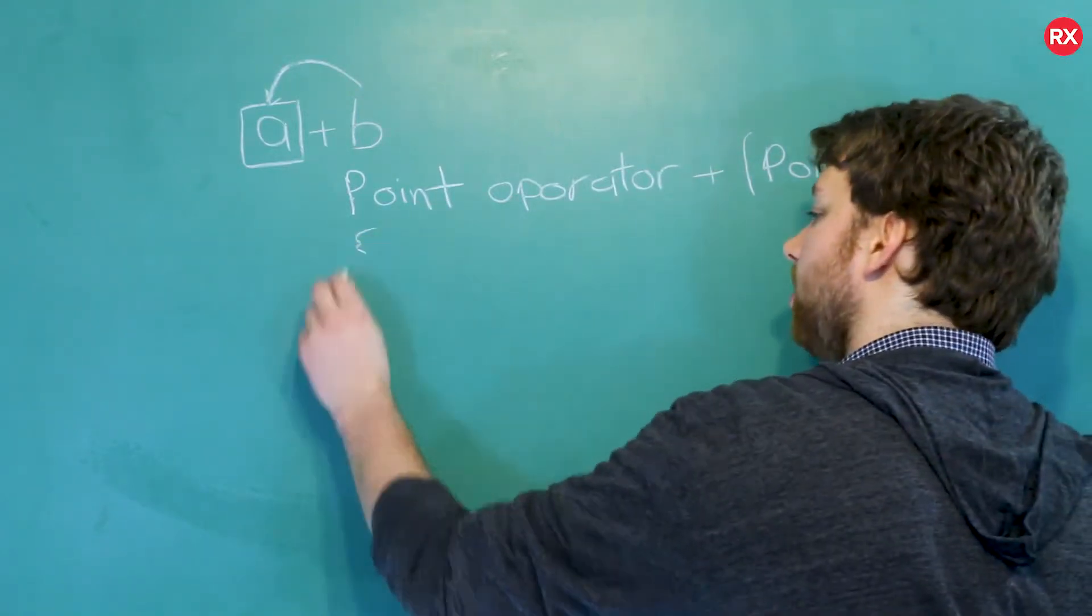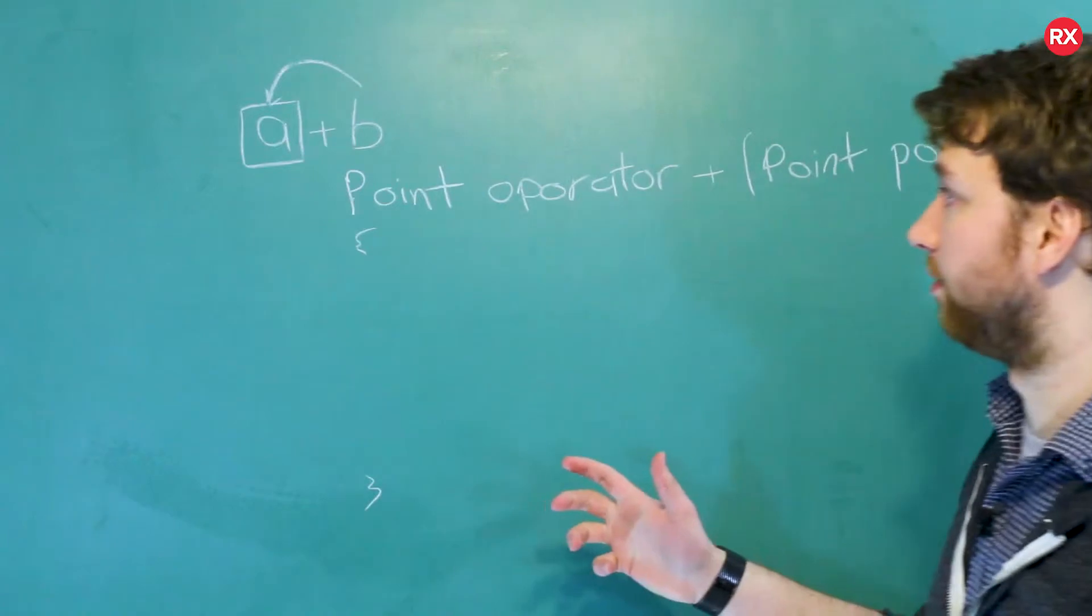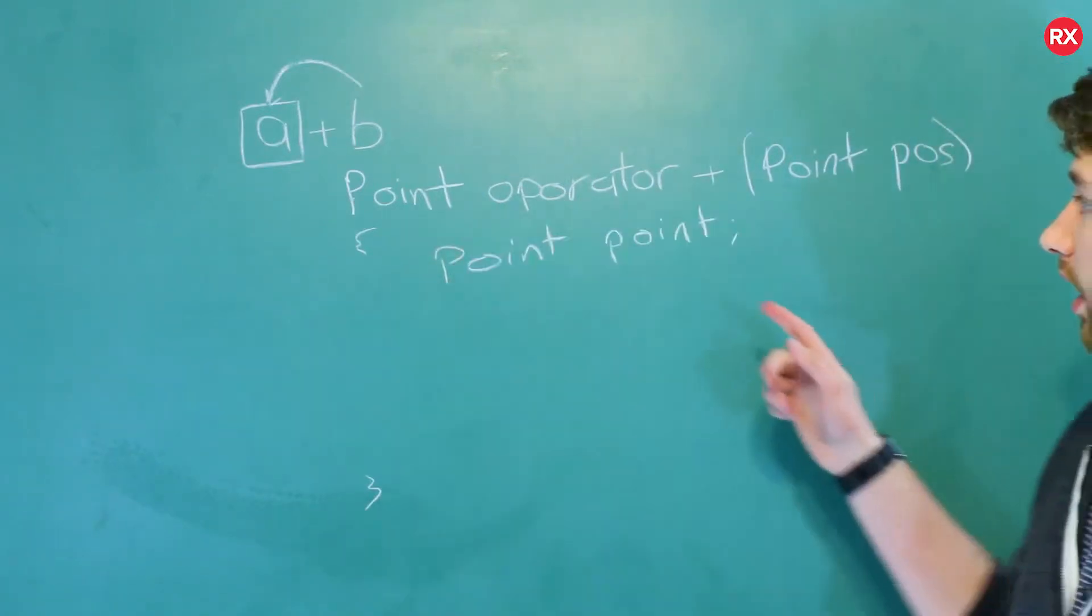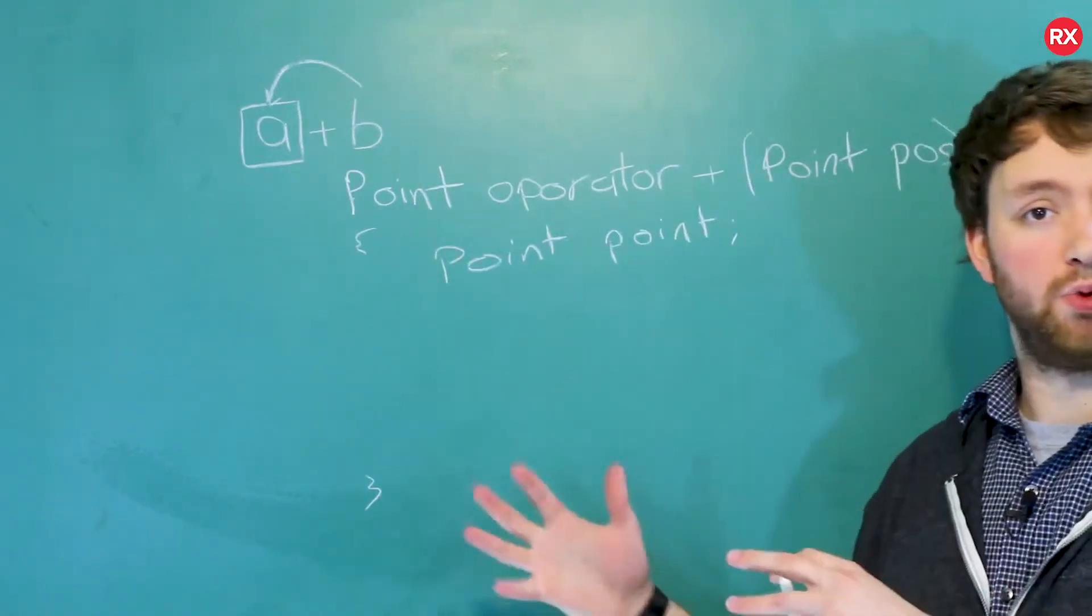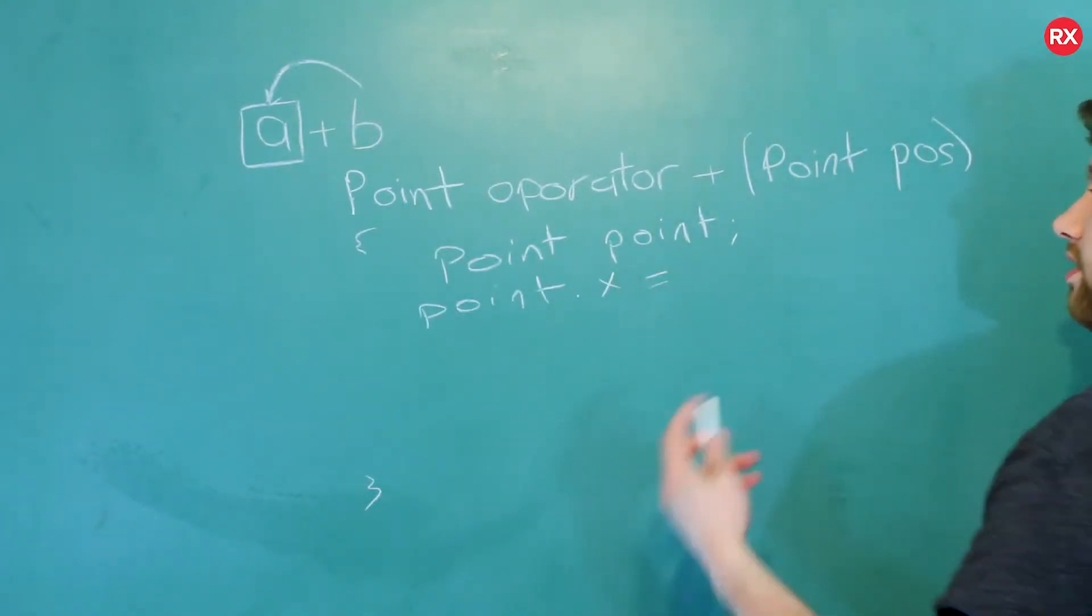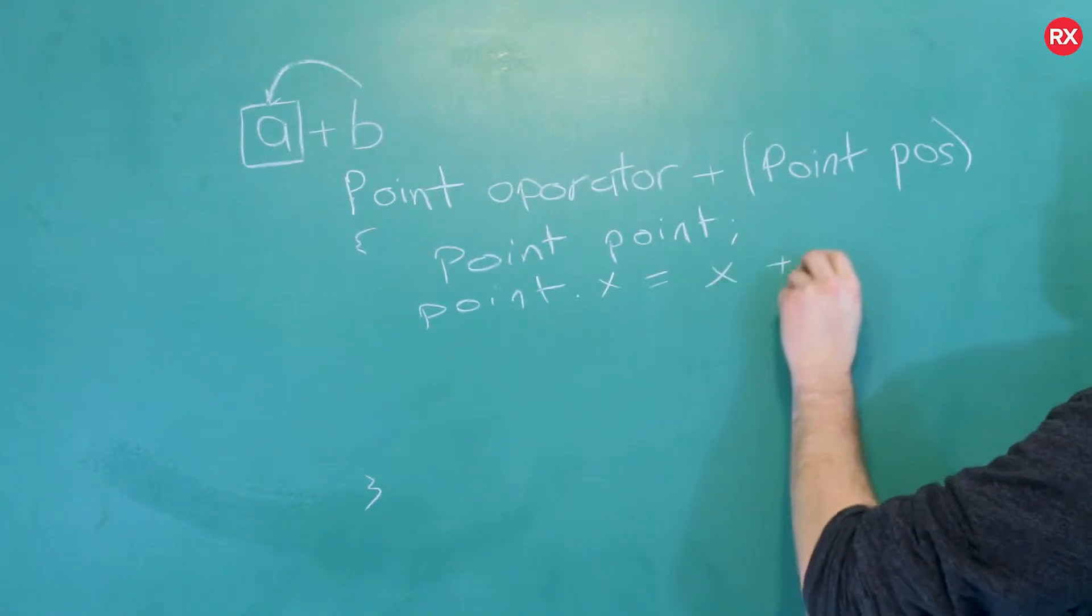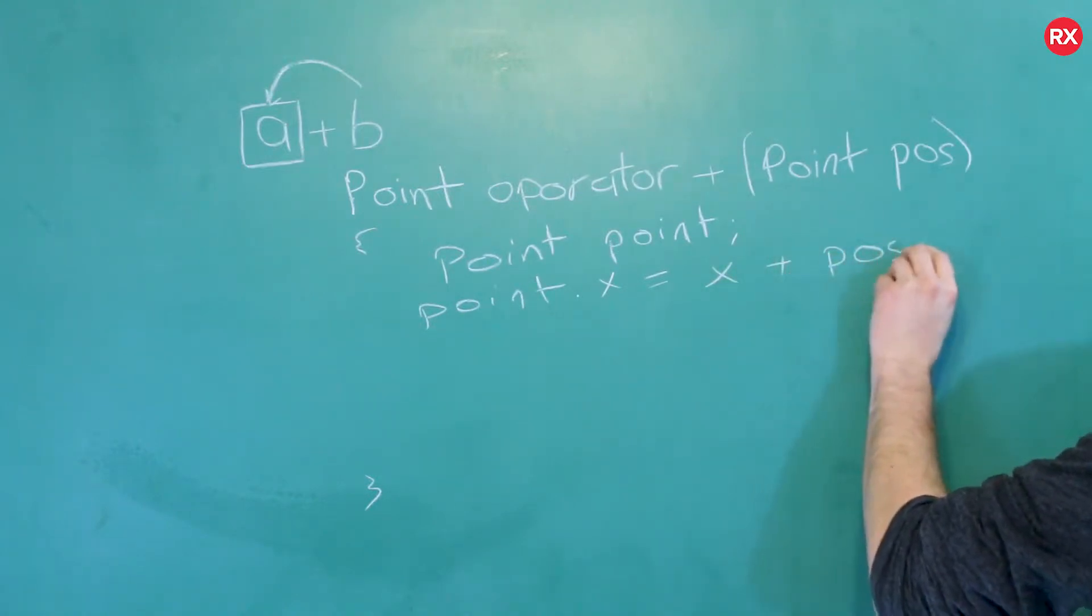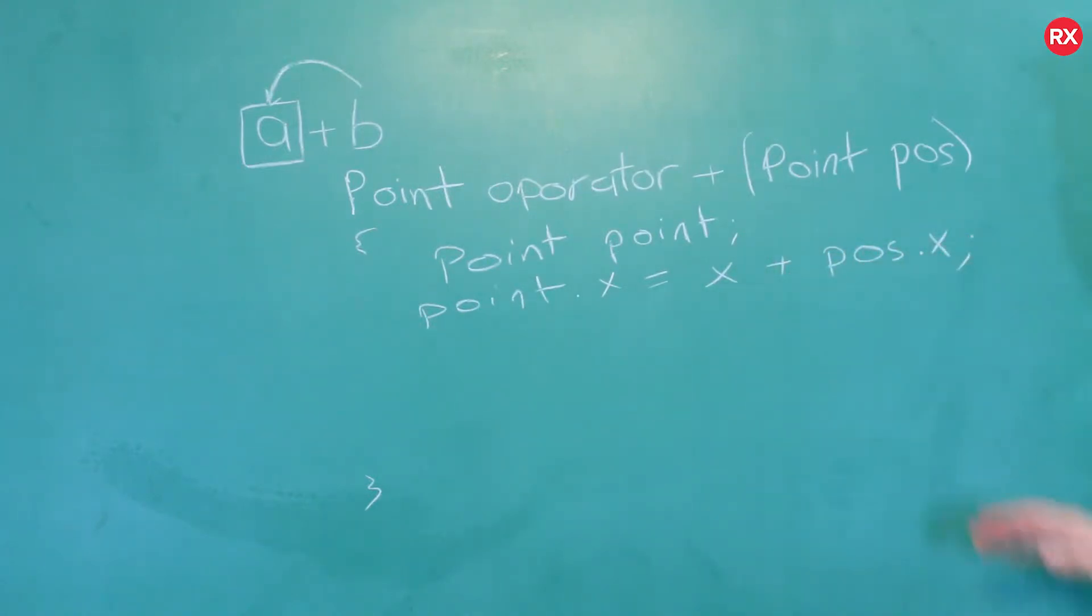Then inside the body, here's what we're going to do. We're going to create a new point. And now all we do is define the X and Y and return it. So point dot X is going to be assigned the value X plus pose X.